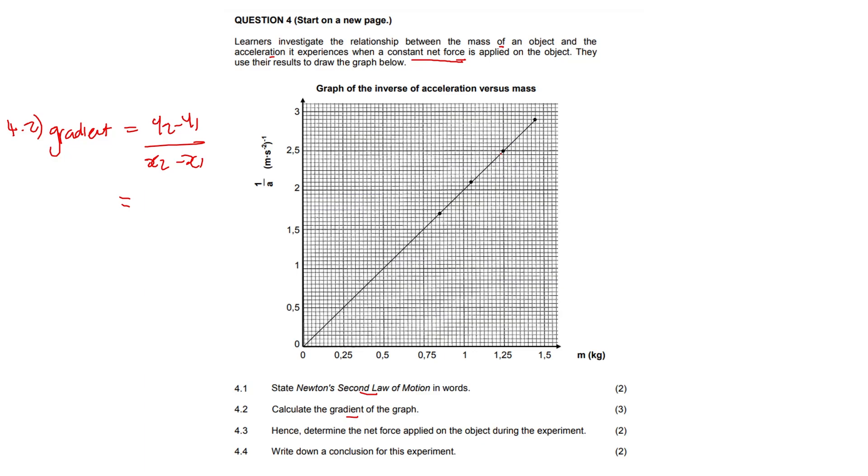Well, let's find two solid ones. So there we have 2.5 and 1.4. So 2.5, 1.25 and that would be 0 and 0, right? So then we take the calculator and we get the gradient to be 2.